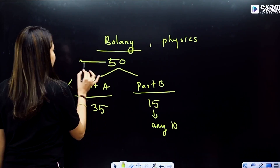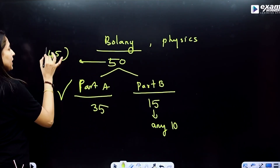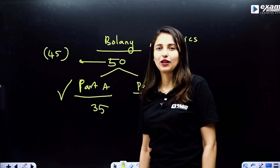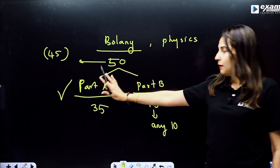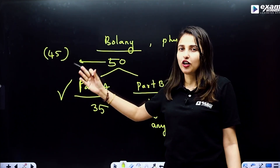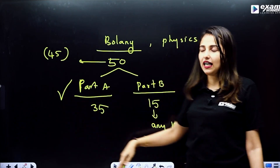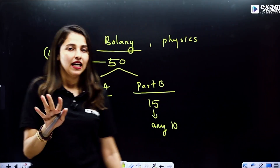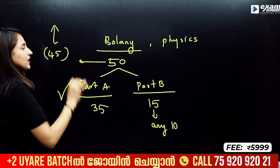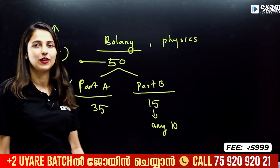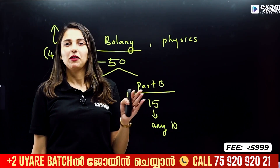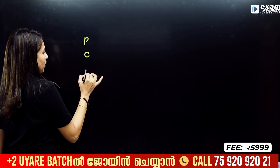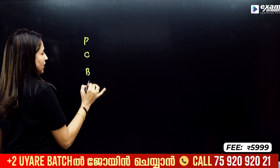In total there are 45 questions: Part A has 35 compulsory questions, and in Part B you answer 10 questions. The subjects covered are Physics, Chemistry, Biology, Botany, and Zoology.